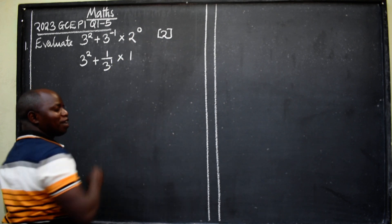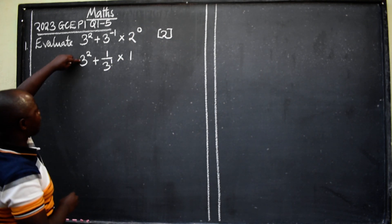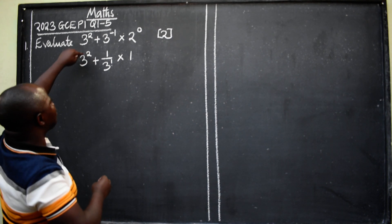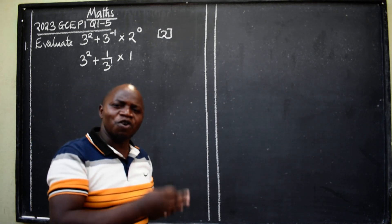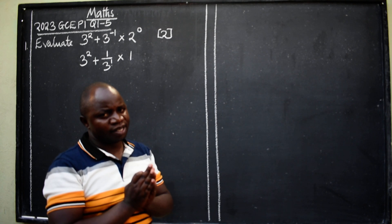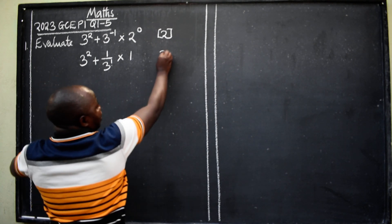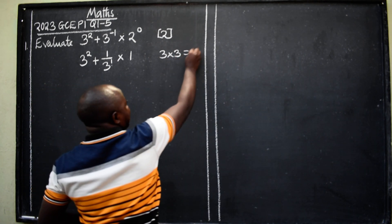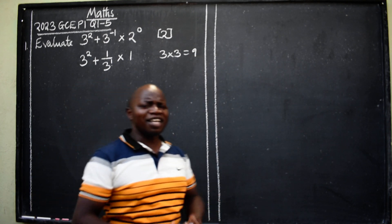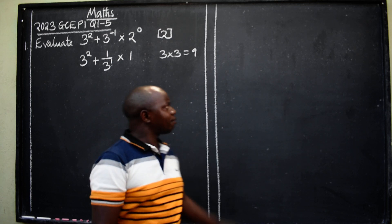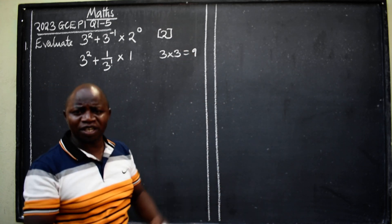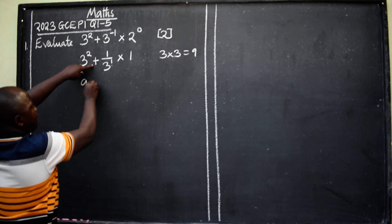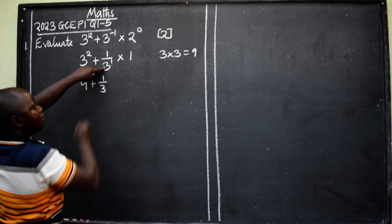So that term gives us 1. Now, 3 to the power 2 means 3 times 3 — not 3 times 2, please don't make that mistake. So it is 3 times 3, giving us 9. Therefore we have 9 plus 1 over 3.